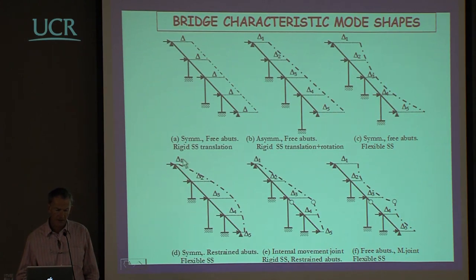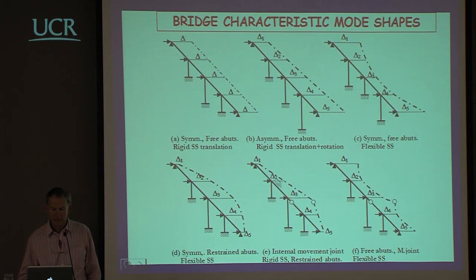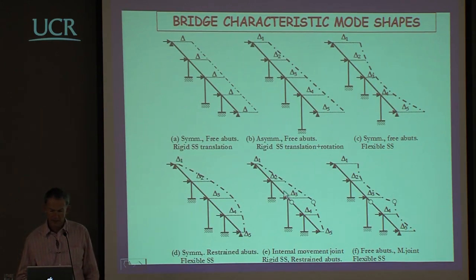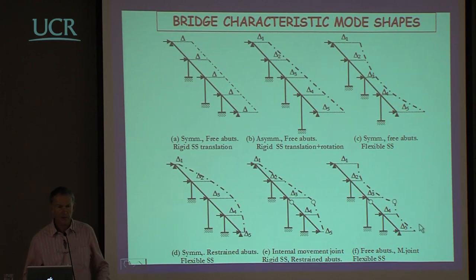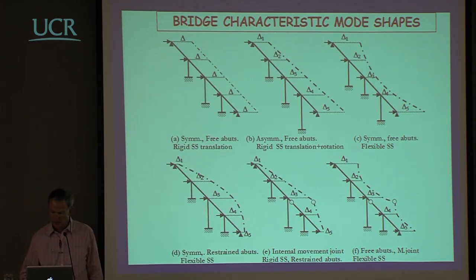If there is a movement joint in the structure at some location that will clearly influence the transverse mode shape. In some cases the superstructure is considered rigid; in other cases it has flexibility. There are a large number of different potential shapes to consider, and it's a matter of judgement, experience, and perhaps iteration to get the shape right.